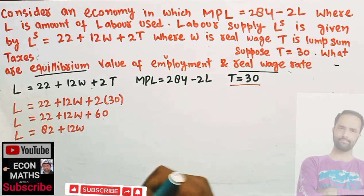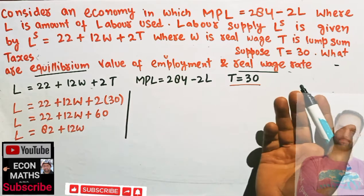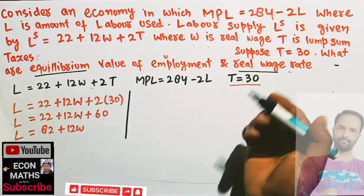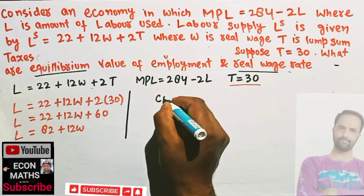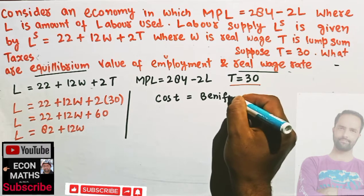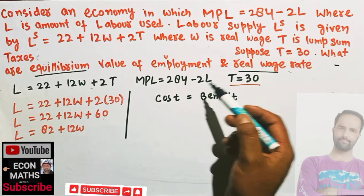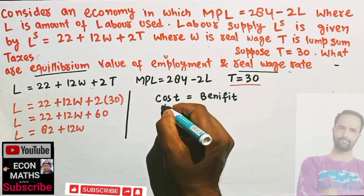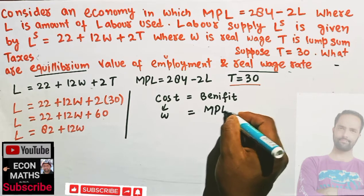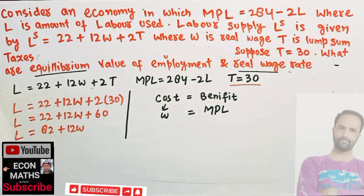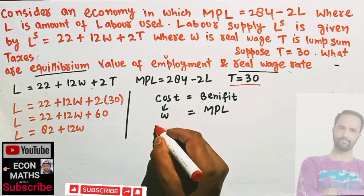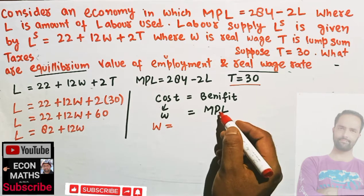Equilibrium occurs where labor supply equals labor demand. Labor demand is determined when the cost of labor equals the benefits from labor. The cost of labor is simply the real wage rate, and the benefit is the marginal product of labor. So a firm hires labor when the wage rate equals the marginal product of labor, and this holds for the economy as well.